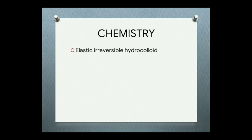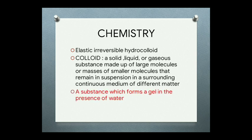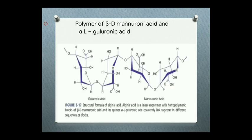Alginate is an elastic irreversible hydrocolloid. A colloid is a solid, liquid, or gaseous substance made up of large molecules or masses of small molecules that remain in suspension in a surrounding continuous medium of different matter. In simple words, a hydrocolloid means a substance which forms a gel in the presence of water. This is the structure of alginic acid — it is a polymer of beta-D mannuronic acid and alpha-L-guluronic acid.